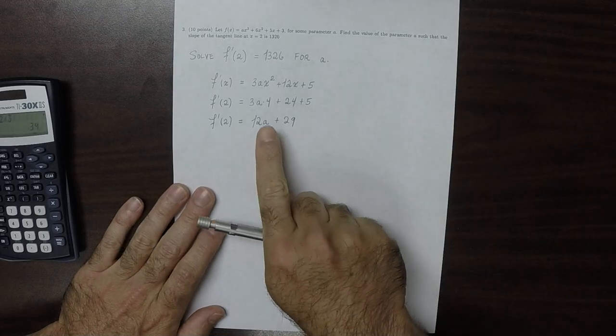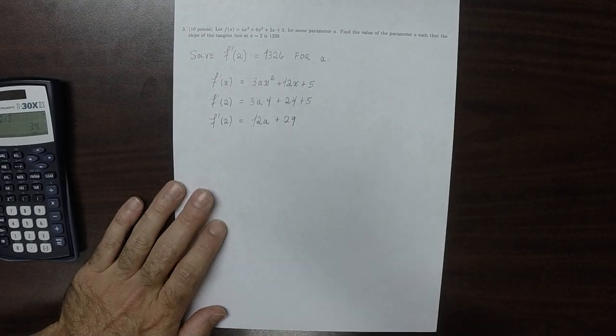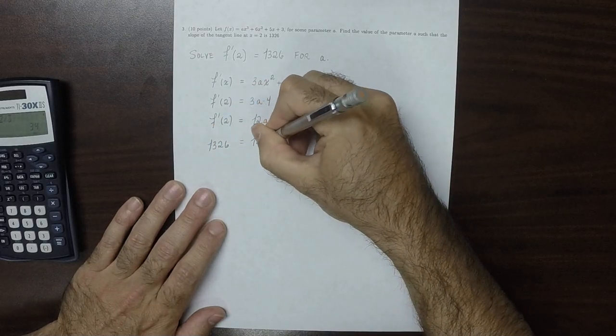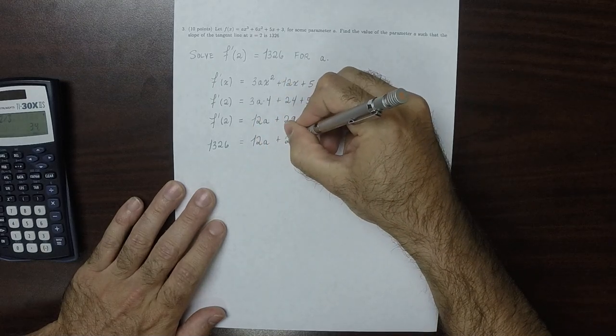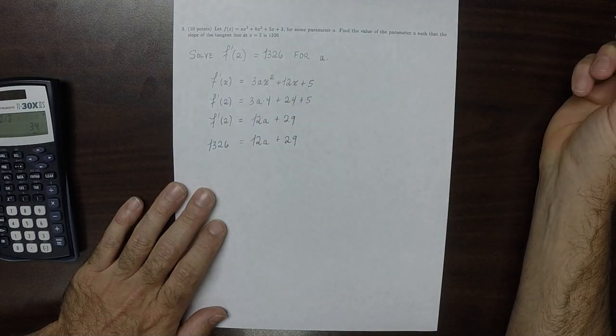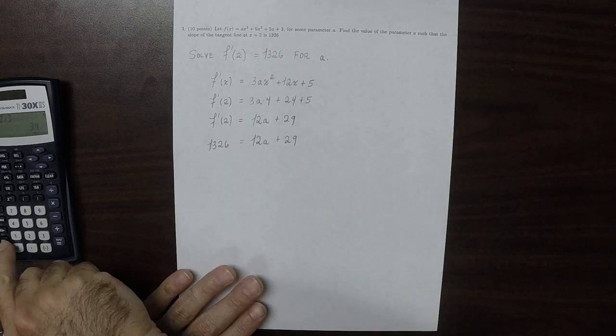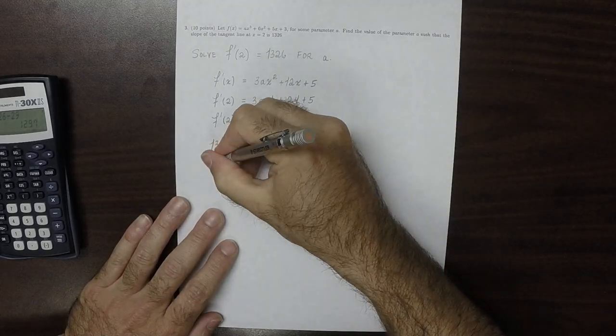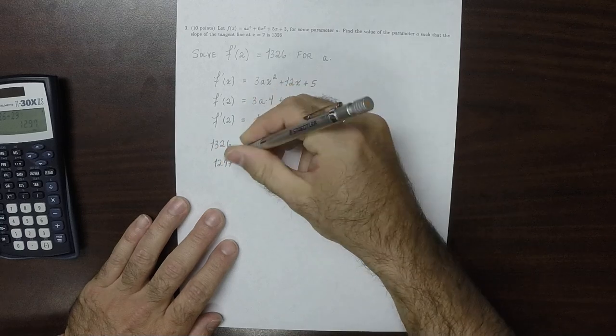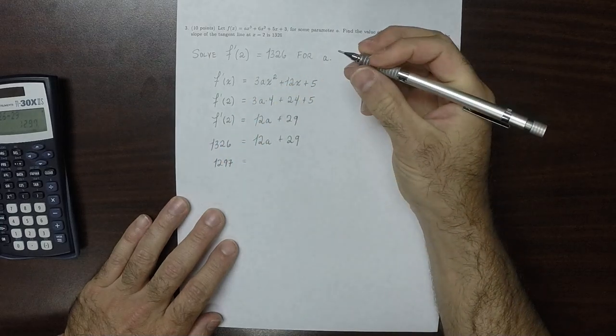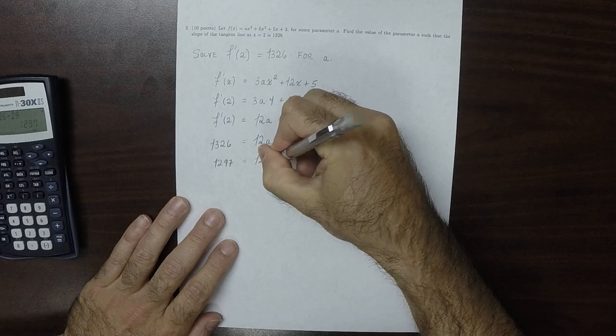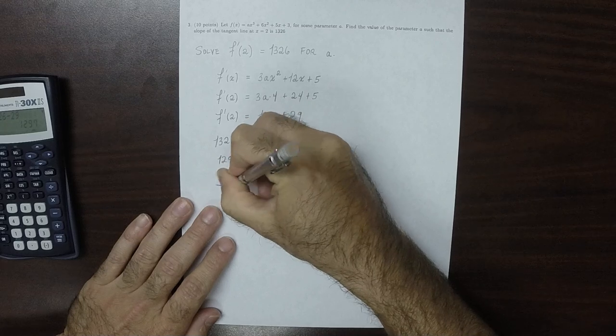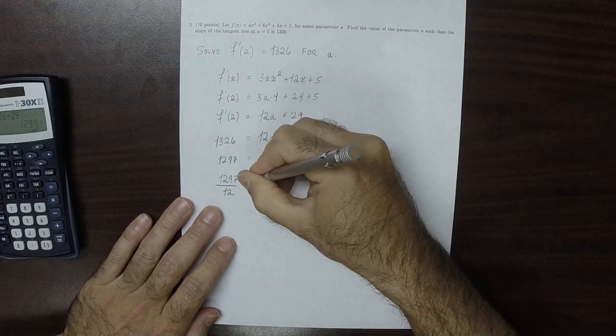And now we want to solve this equal to 1326. So 1326 equal to 12A plus 29. Subtract 29 from both sides. So 1297 is equal to 12A. And therefore, 1297 over 12 is A.